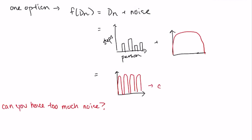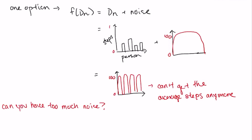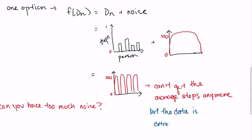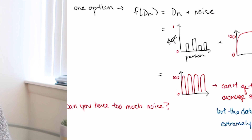However, the more noise you add, the less accurate the information you're sharing becomes. In other words, if epsilon equals zero, even though you've achieved peak privacy, you've done it at the expense of adding so much noise that the output of your function isn't useful anymore.